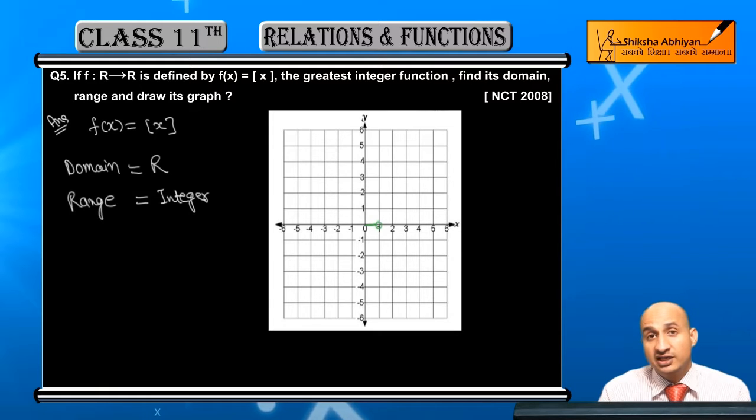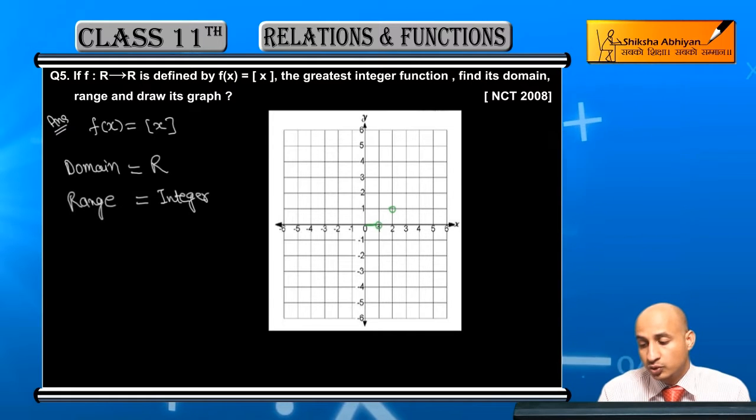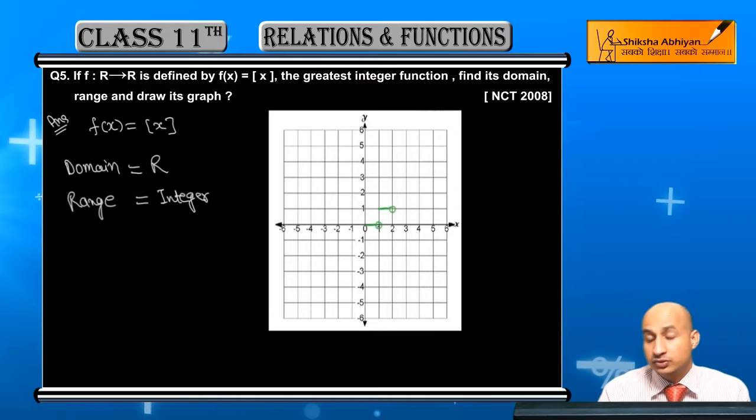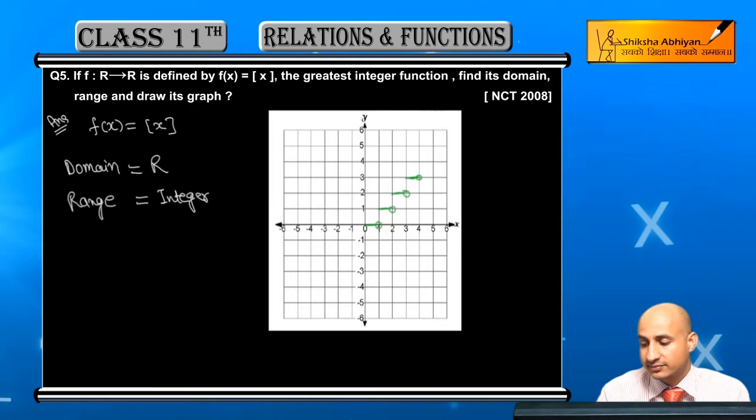Next, if you have values between 1 and 2, the output will be 1. If you have this value, it will be this. Similarly like this. Now if we talk about this, the values here are like this.